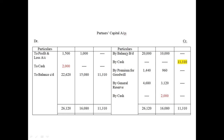Till now you have written: 20,000 / 1,440 / 4,680 / 10,000 / 960 / 3,120. Do not write the amounts highlighted in red yet, and do not write the one highlighted in yellow either. Do not find the totals yet because we don't know those amounts at this point.